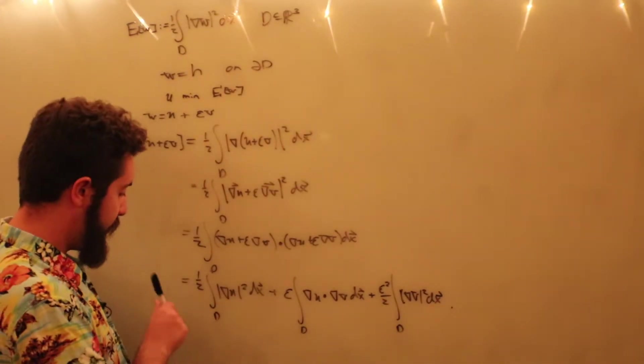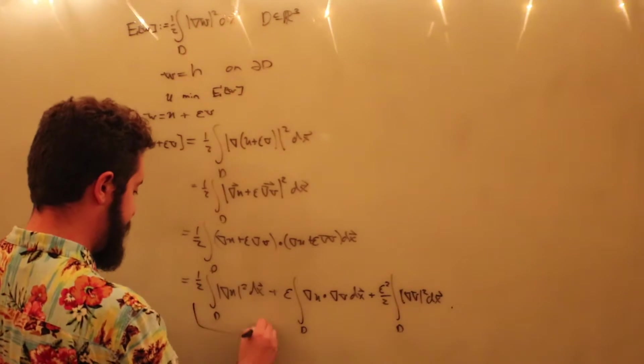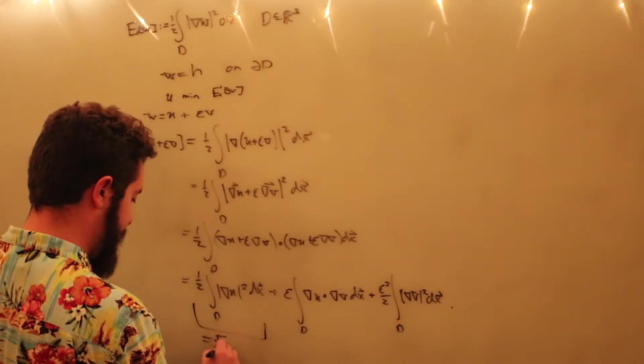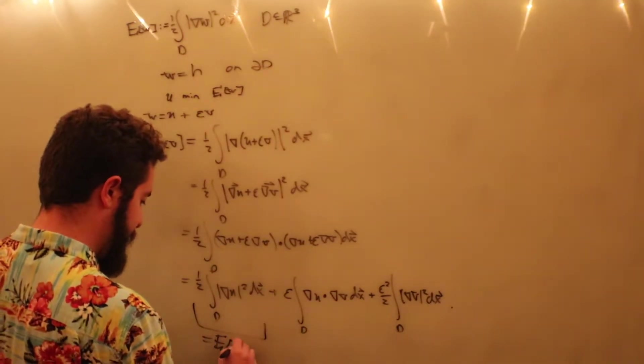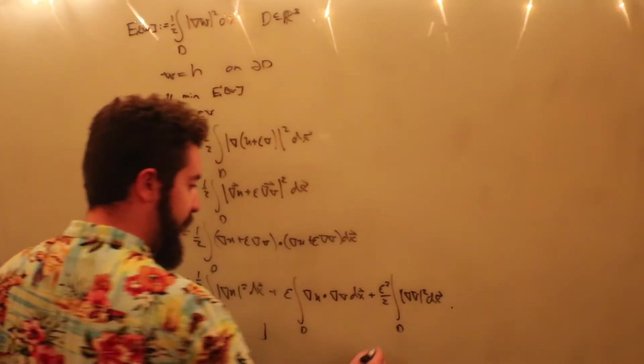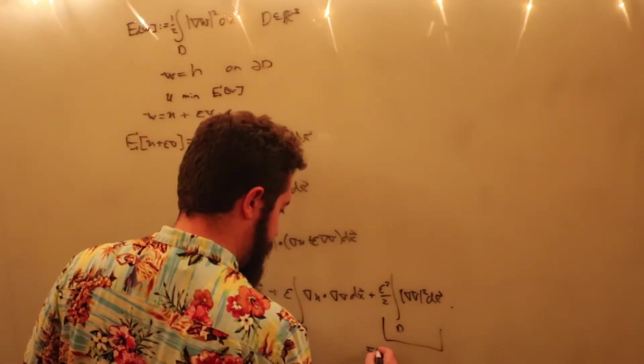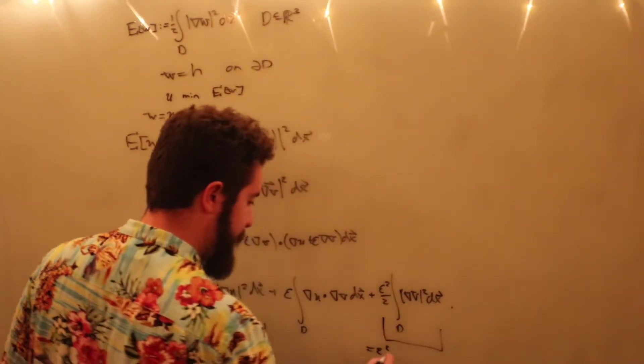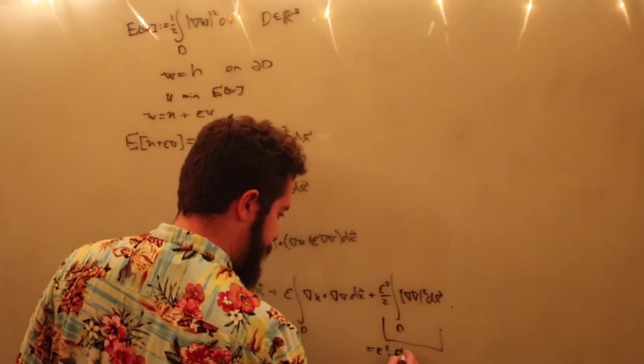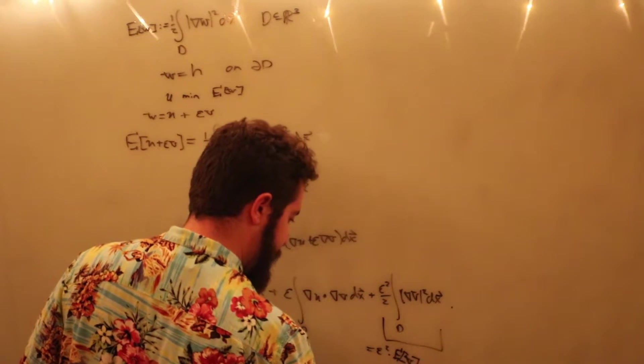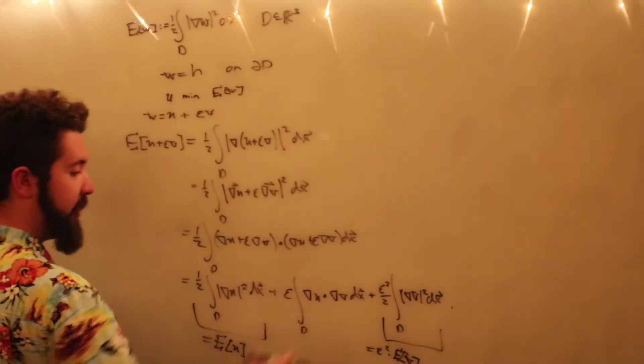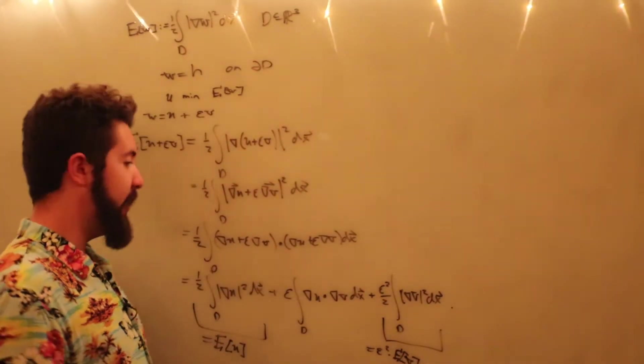Alright, so what I want you to notice is that this is just equal to the energy due to the function u. And that this is equal to epsilon squared times the energy due to phi. So this is really the only mysterious term in this whole bit.